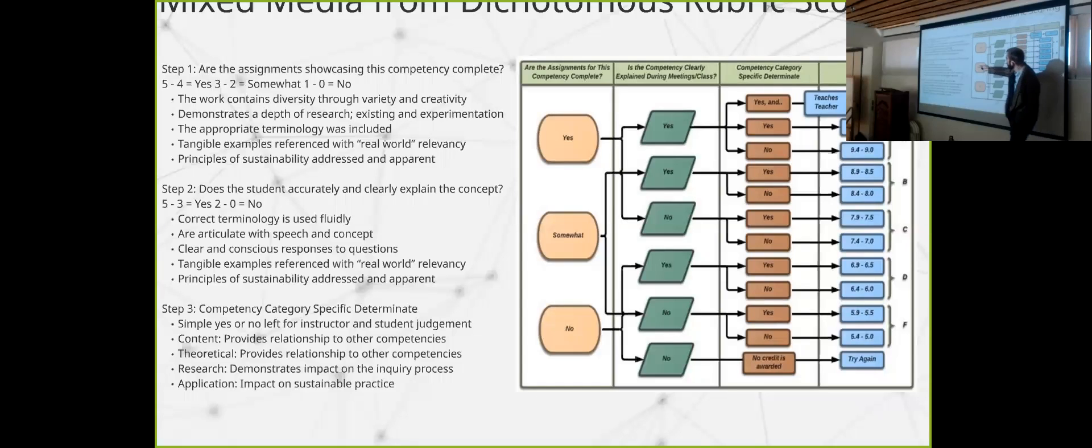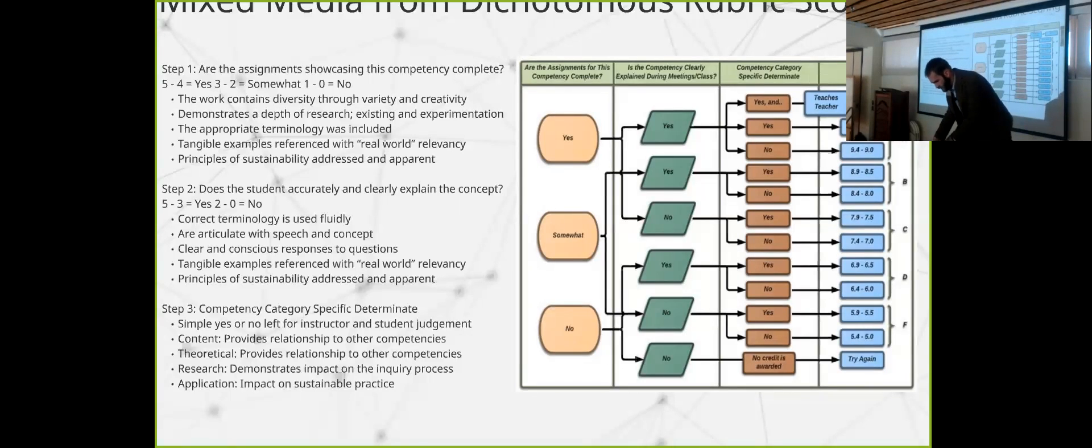And in this process over here, does the student accurately and clearly explain the concept? Did they use correct terminology? Did they articulate with speech and concept? Did they use clear and conscious responses to questions? We'll move on. If you notice up at the top or at the top of each category, if they got three, five or three or five or four of each one of them, that would be a yes or maybe or somewhat or a no. And that would then flow to then a numerical value of the grade of the competency in which they were being assessed on.